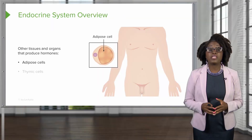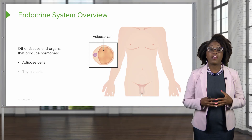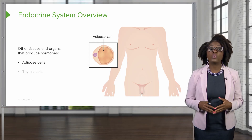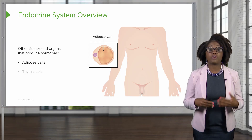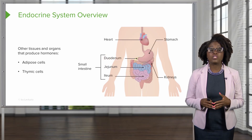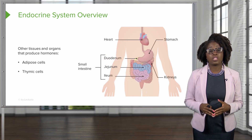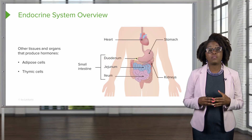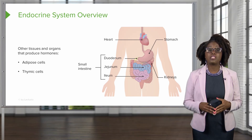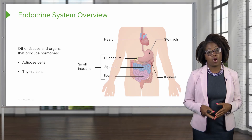Other tissues and organs in the body that have the ability to produce hormones include our adipose or fat cells, as well as our thymic cells, cells in the walls of the small intestines, the stomach, the kidneys, and the heart.